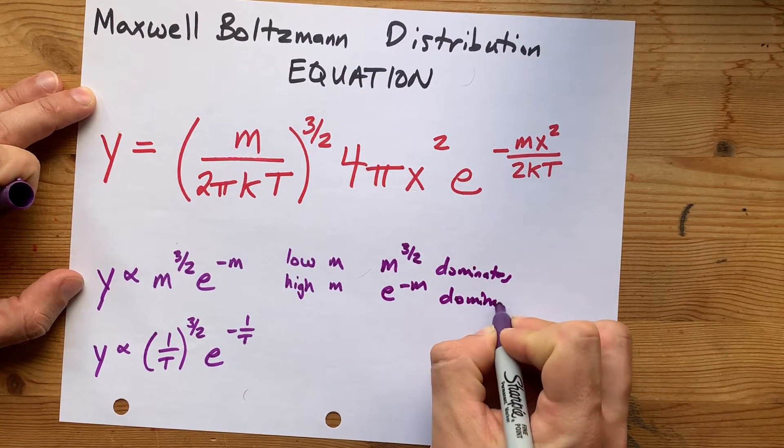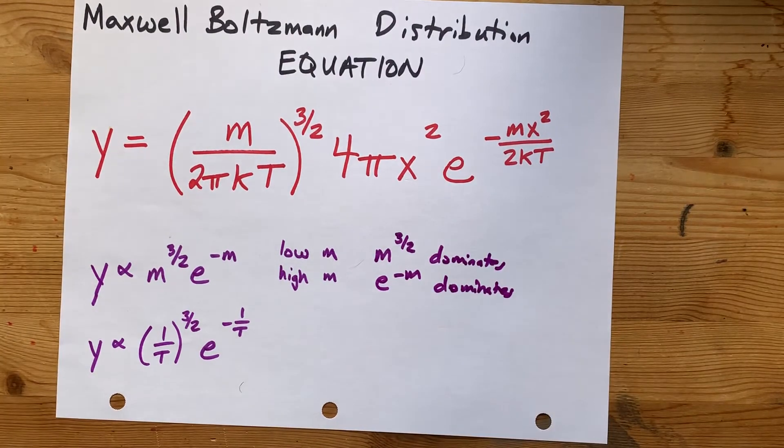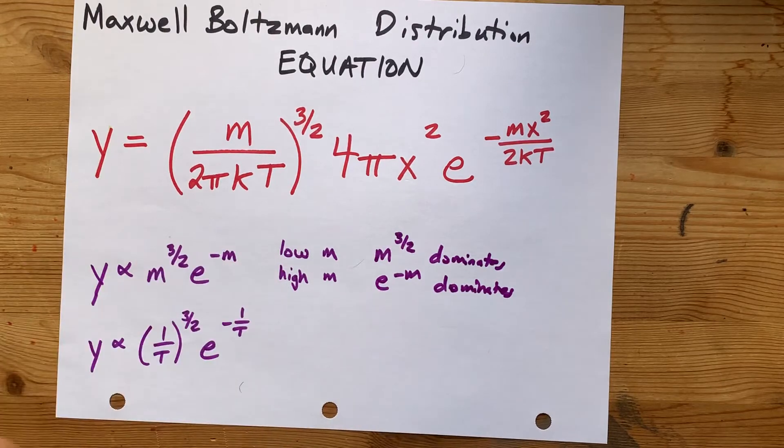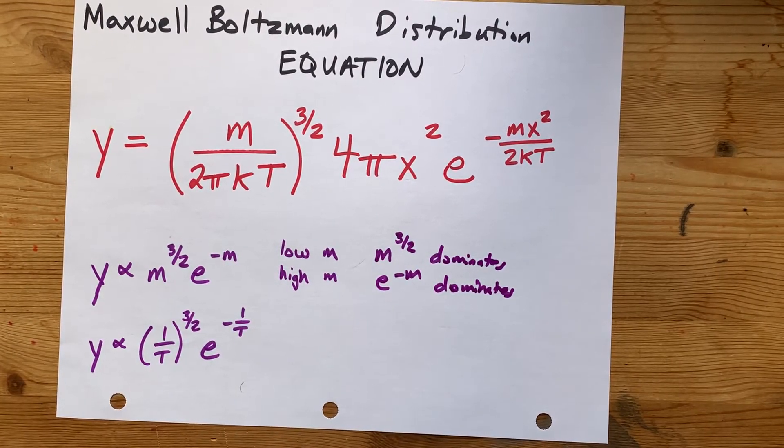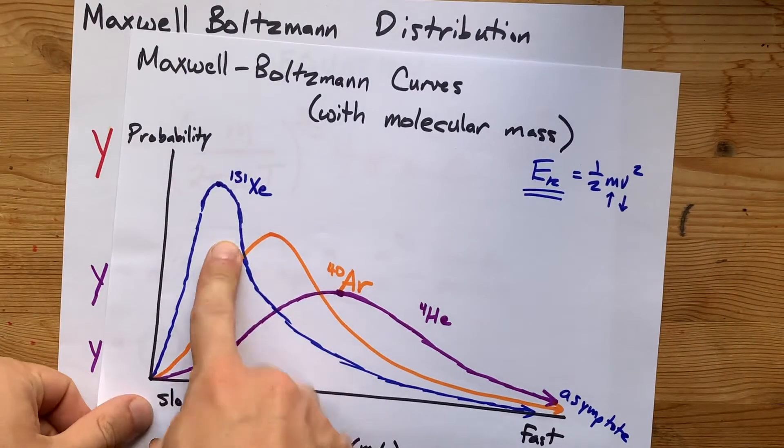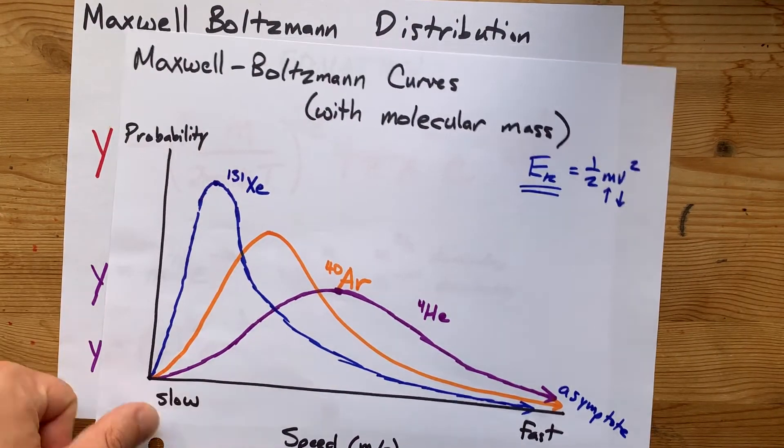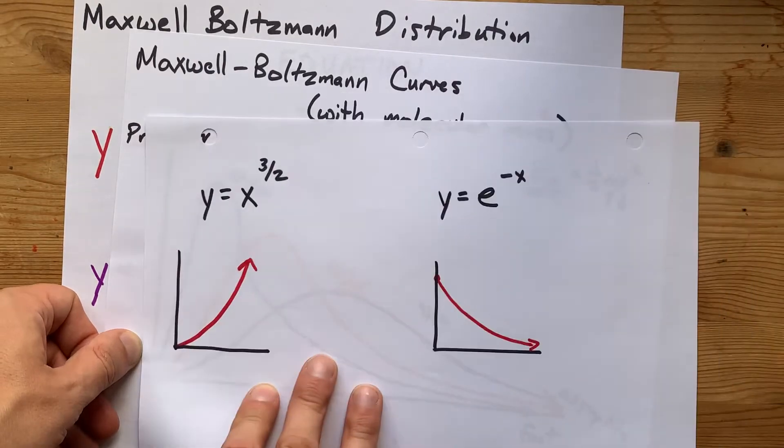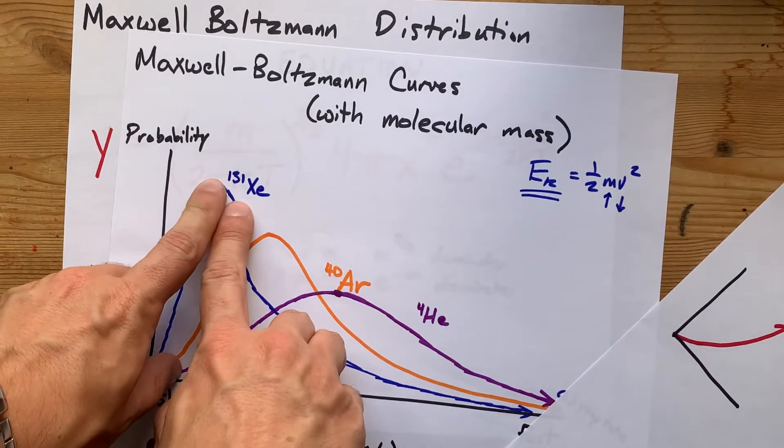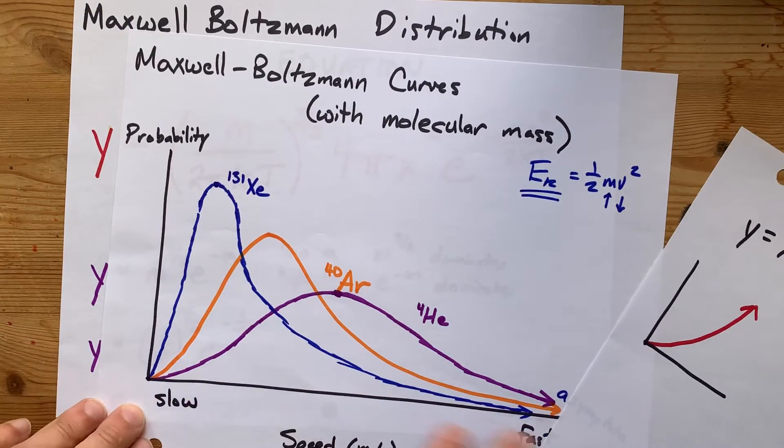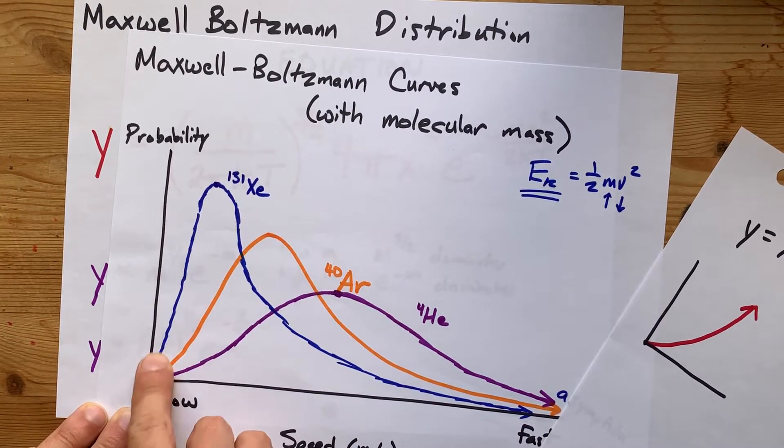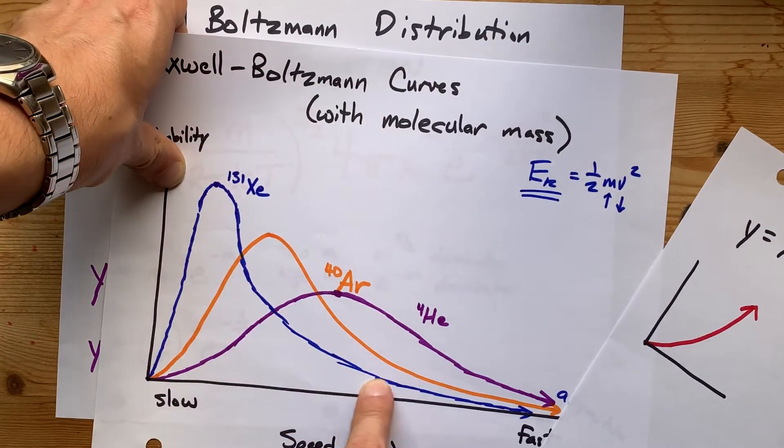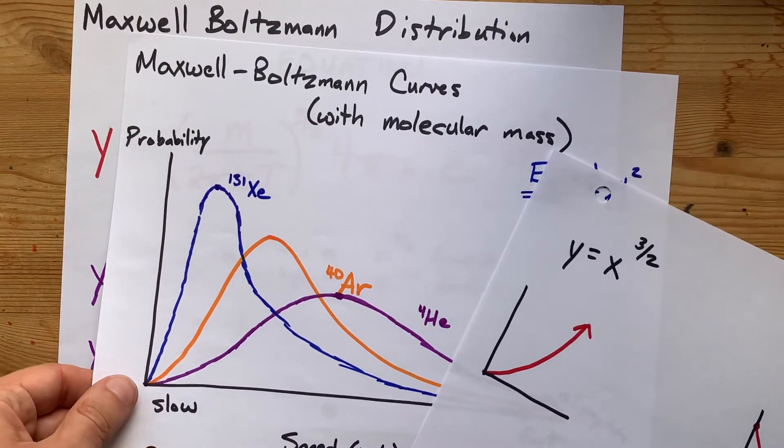So the higher the molar mass, or particle size I guess I should say, the higher the curve is on the left half of the peak, where it's this curve dominating, right? The heavier the particle, the higher the M, the more steeply parabolic it's going to be here, and it'll decay towards 0 faster as well.